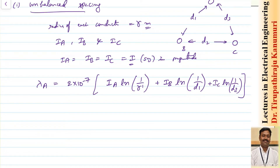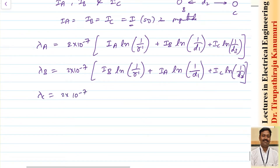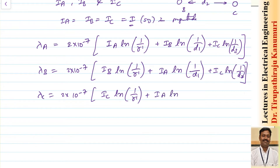Similarly, the flux linkages for conductor B: λb = 2×10⁻⁷ [ib·ln(1/r') + ia·ln(1/d1) + ic·ln(1/d2)]. And for conductor C: λc = 2×10⁻⁷ [ic·ln(1/r') + ia·ln(1/d3) + ib·ln(1/d2)]. Let us take all three as equation number one.